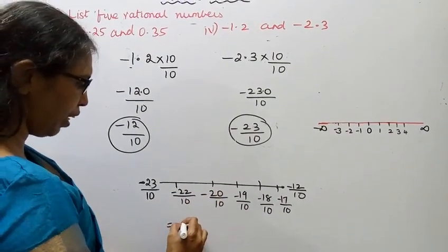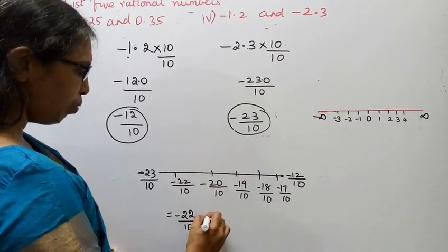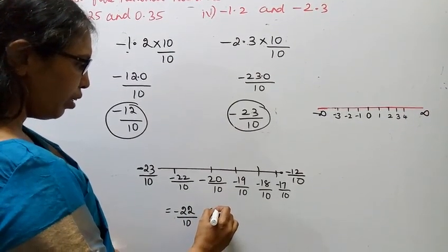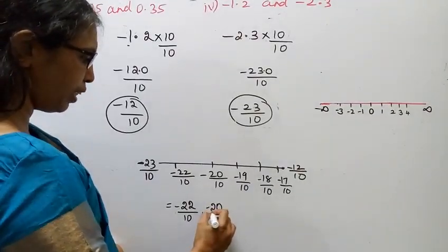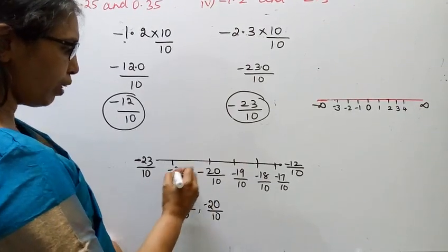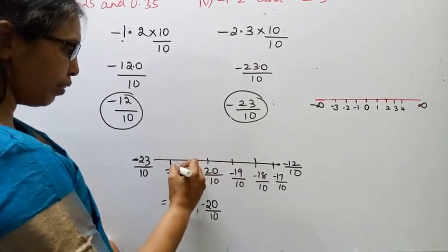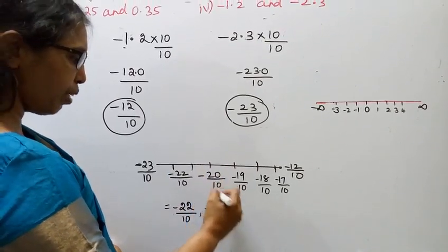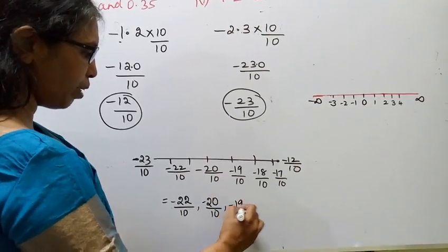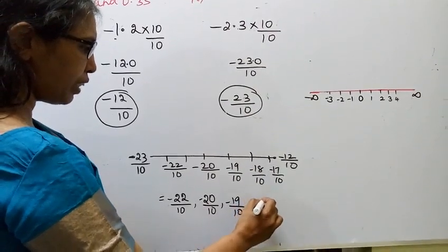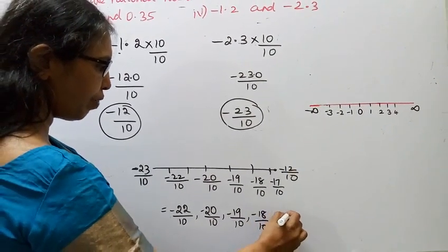If we need to answer five rational numbers, we select: minus 22 by 10, minus 21 by 10, minus 20 by 10, minus 19 by 10, and minus 18 by 10. These are the five rational numbers between minus 1.2 and minus 2.3.